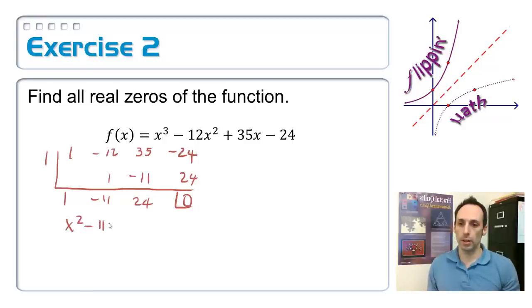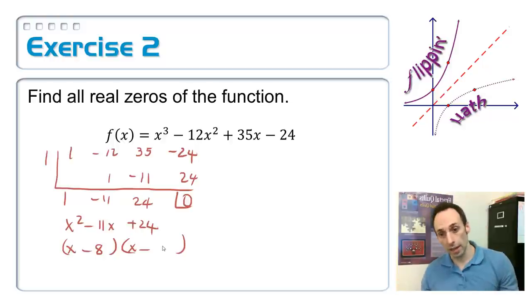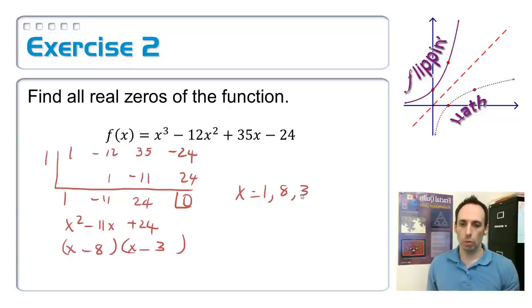And then I'd go and I'd factor that thing. So open up my parentheses, got an x and an x. They've got to multiply up to 24, and they have to add up to negative 11. So how about it is negative 8 and negative 3, which means x could be equal to 1, 8, or 3.